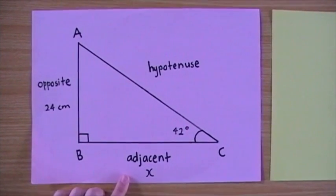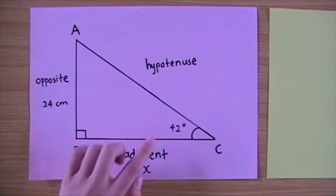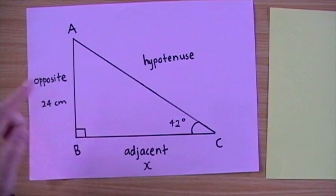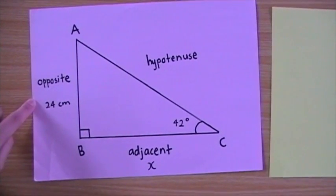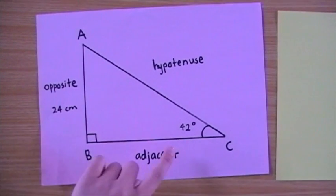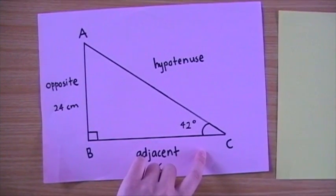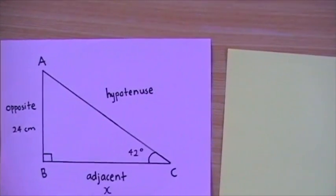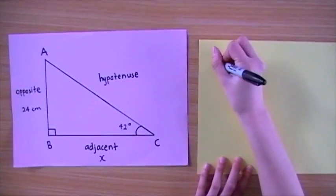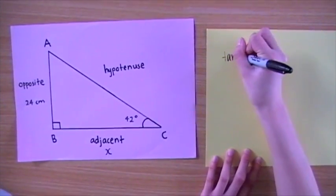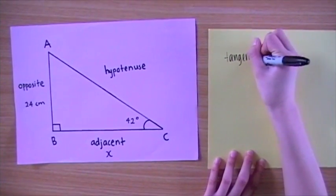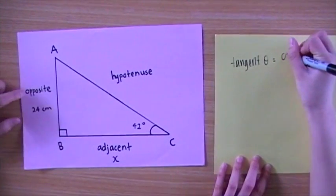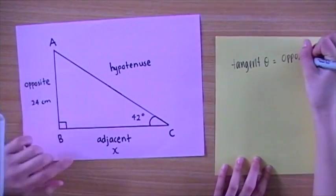So how do we find X? X is adjacent to the angle 42 degrees, and the side 24 centimetres is the opposite of the angle. So we use the trigonometric ratio for tangent. Tangent theta equals the opposite side over the adjacent side.